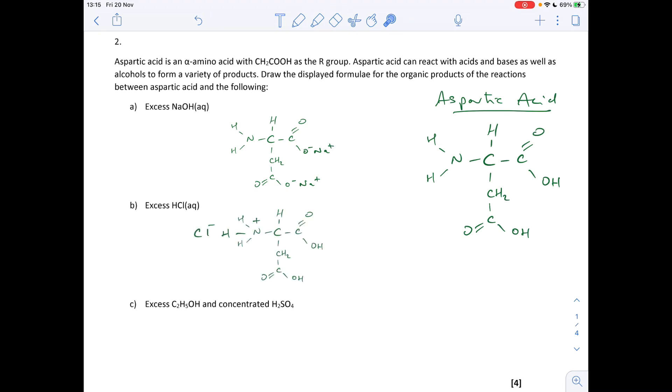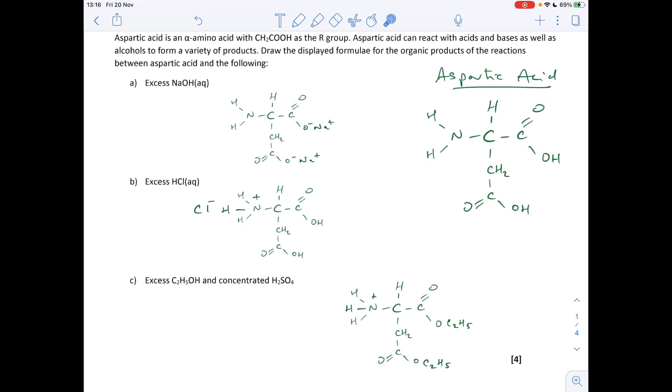And then finally, excess ethanol and concentrated sulfuric acid. We need to be thinking esterification. What part of the aspartic acid can react with the alcohol? Well, it's the carboxylic acid parts. There's a bonus mark actually for this because remember, these acidic conditions will supply H plus ions to the reaction mixture and the lone pair on that nitrogen can accept one. So there's the structure there. There's one mark for getting the ester bit right. There's a bonus mark for getting that bit right there.